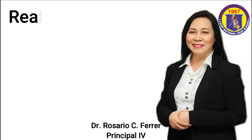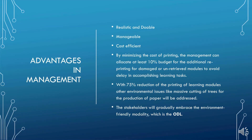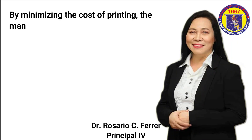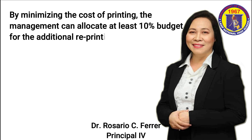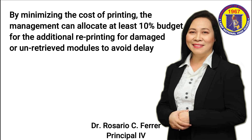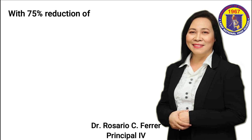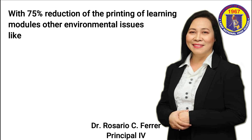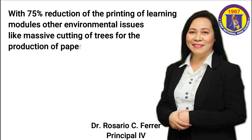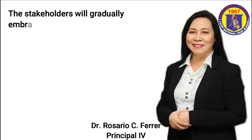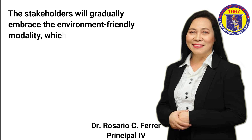Advantages in management: It is realistic and doable. It is manageable in the sense that we will print only one-fourth of the modules — 300 modules for 300 learners times 8 learning areas — equivalent to 2,400 modules per month, rather than 38,400 modules per month for 1,200 learners. This is cost-efficient. By minimizing printing costs, management can allocate at least 10% of the budget for additional reprinting of damaged or unretrieved modules. With a 75% reduction in printing, environmental issues like massive cutting of trees for paper production will be addressed, and stakeholders will gradually embrace the environment-friendly modality, which is the ODM.